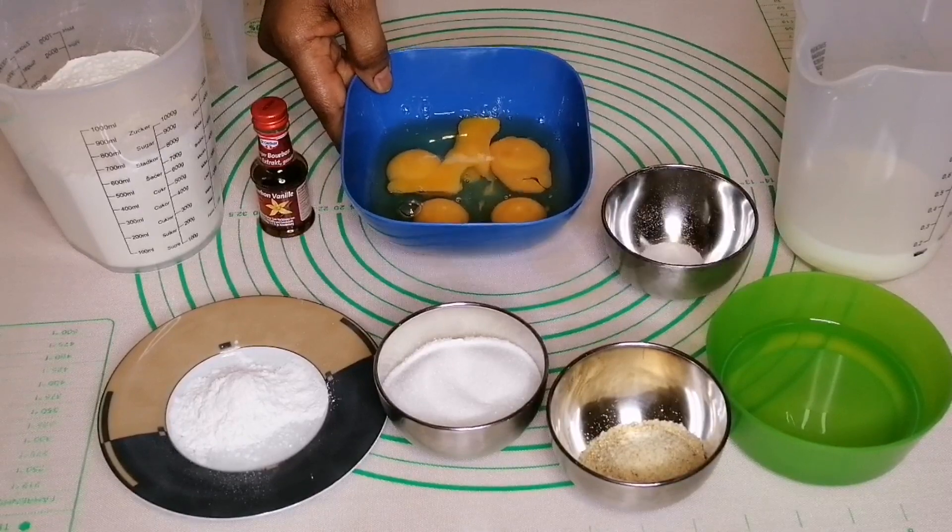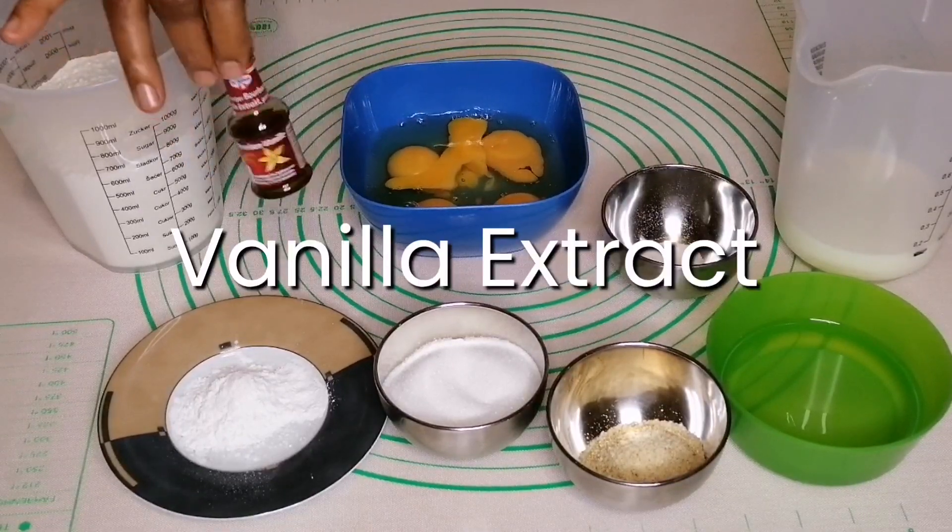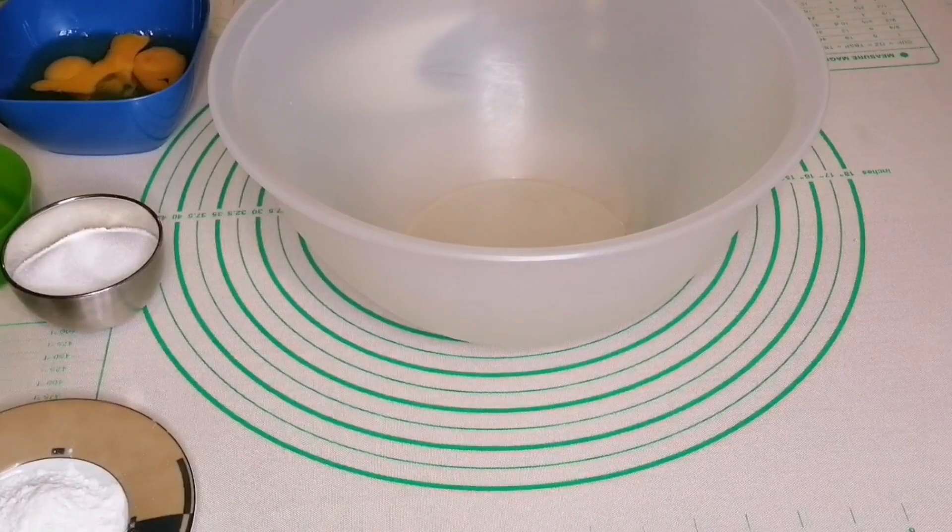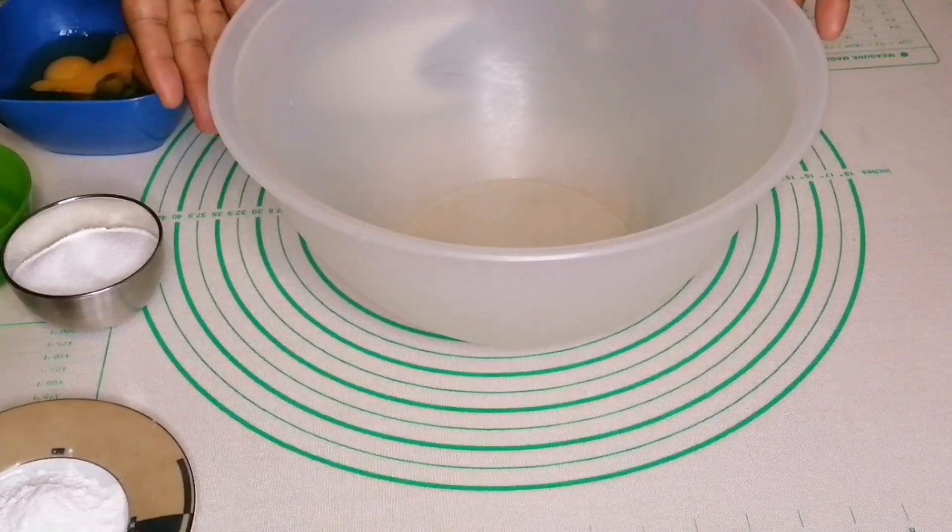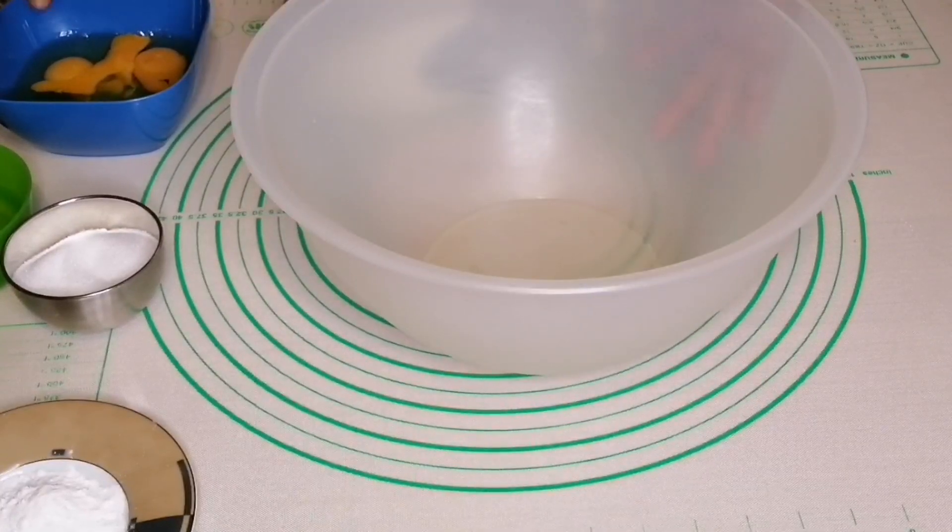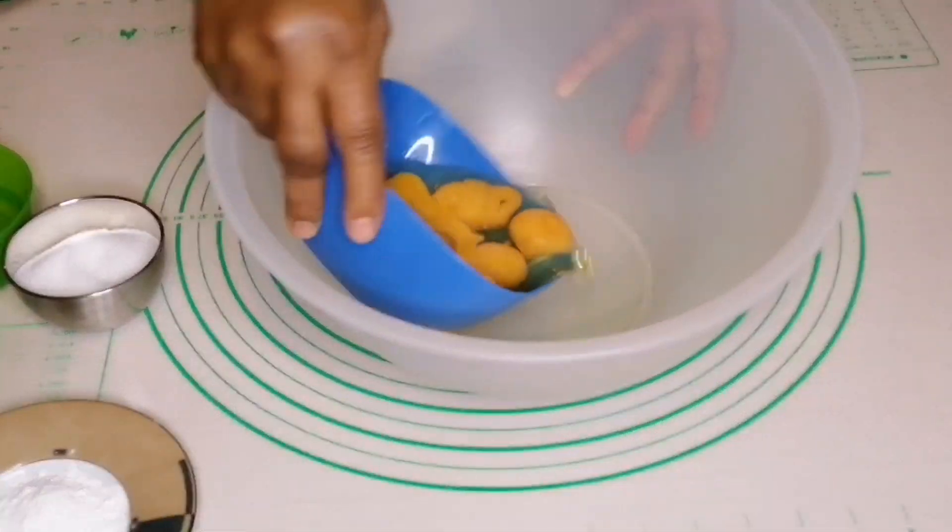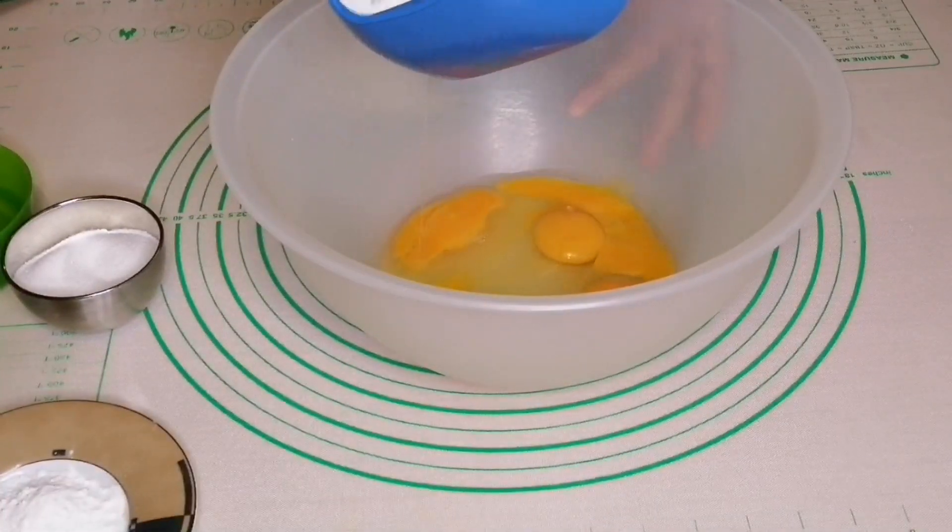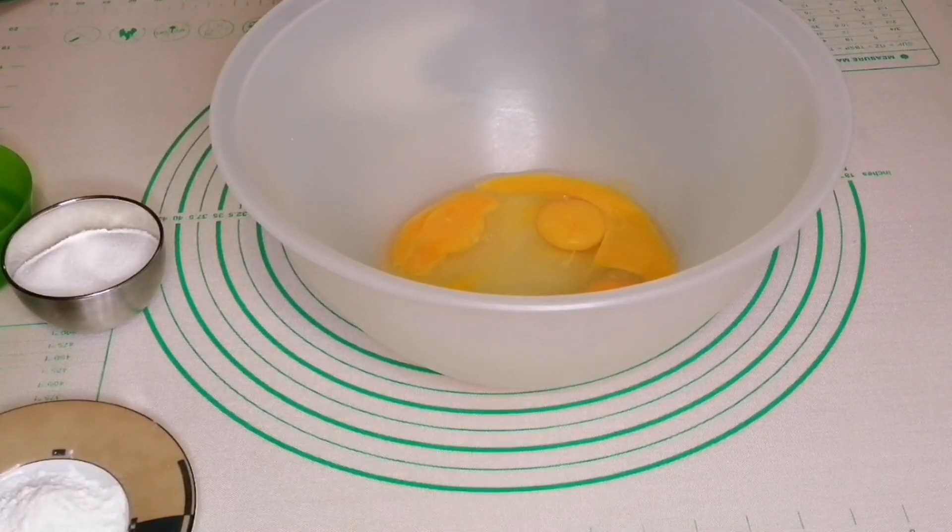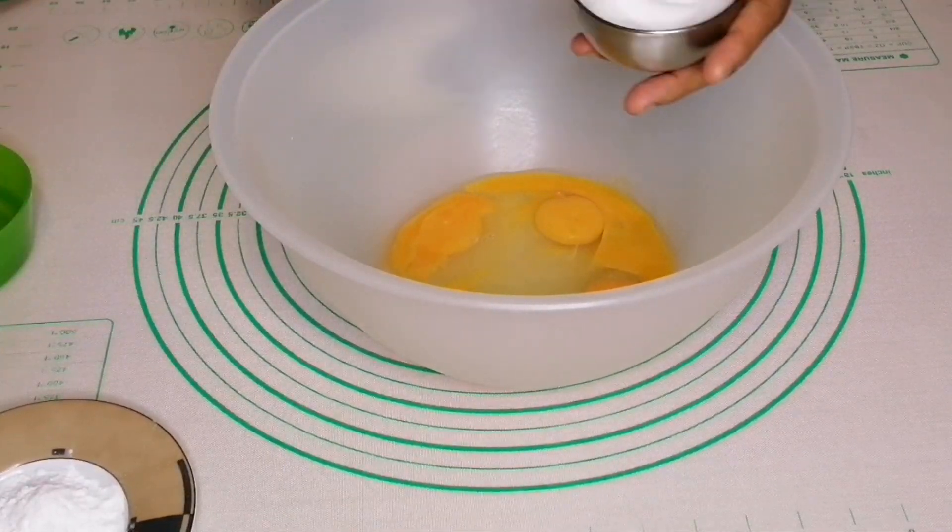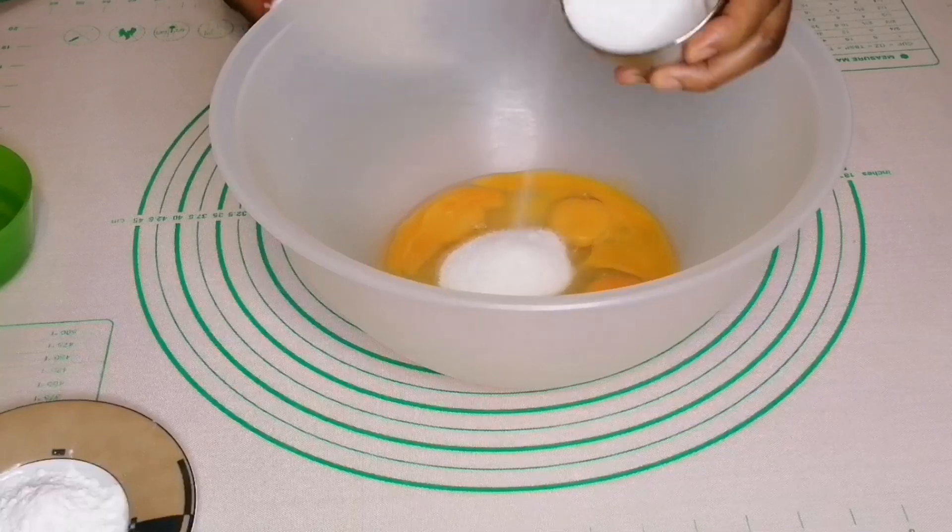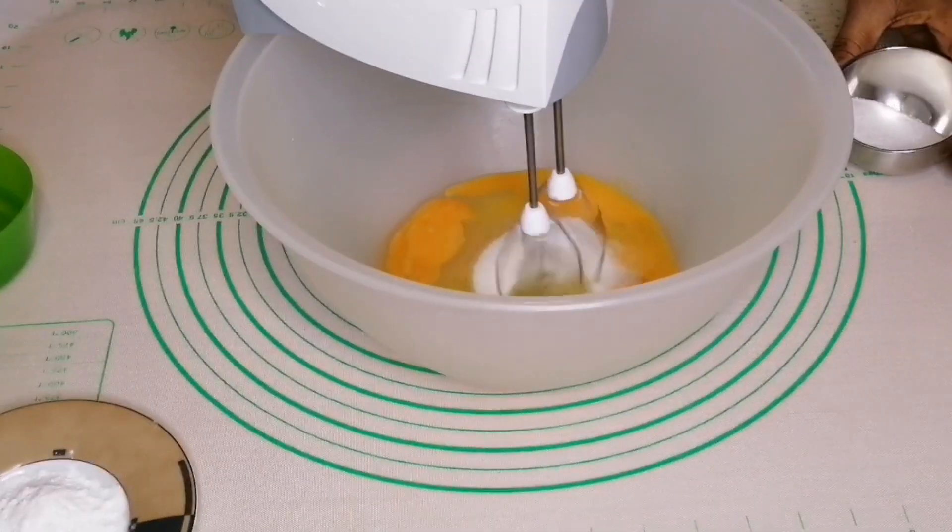Now let's start. The first thing is to pour the eggs into the bowl, followed by the sugar bit by bit, and start beating.